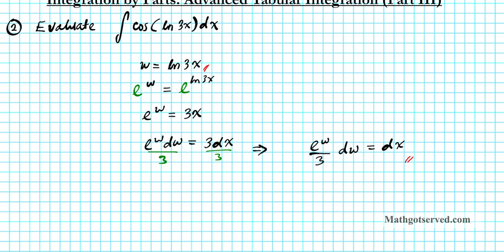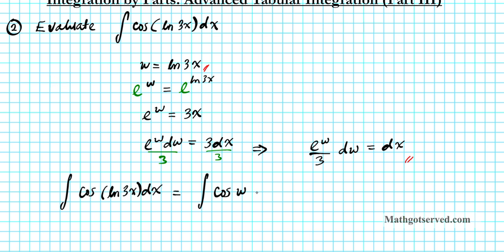Let's go ahead and rewrite our new problem. The original integral of cosine of the natural logarithm of 3x dx, using our W substitution, now becomes the integral of cosine of W times E to the W over 3 dW.